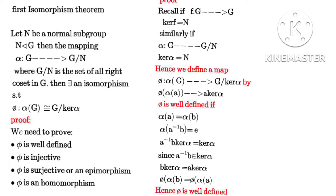We need to prove that the mapping is well-defined, injective, surjective, and a homomorphism — these four conditions must be satisfied. For the first condition, we define a mapping φ such that α(g) maps to g·ker(α), meaning φ(a) maps to a·ker(α). Similarly, φ(b) equals b·ker(α).